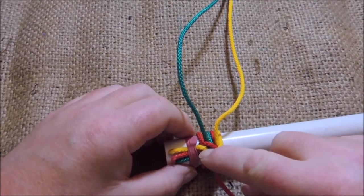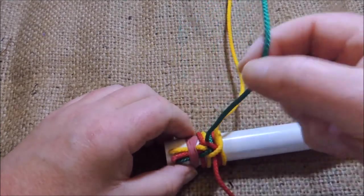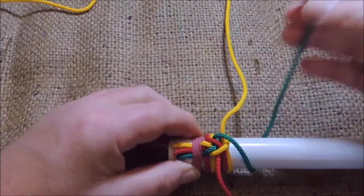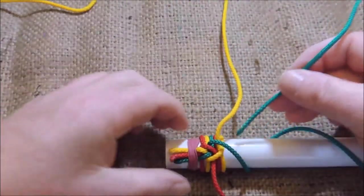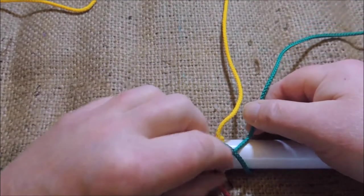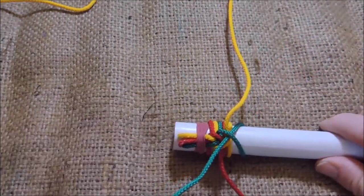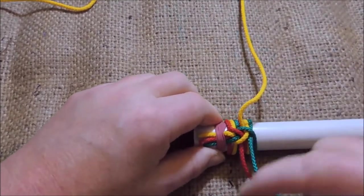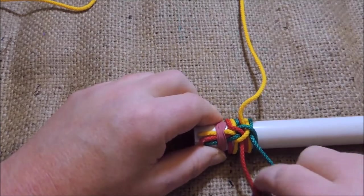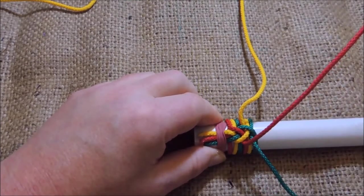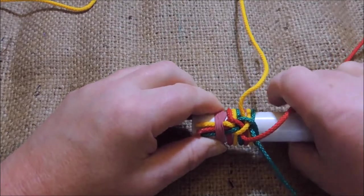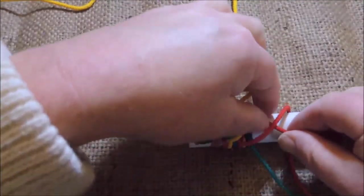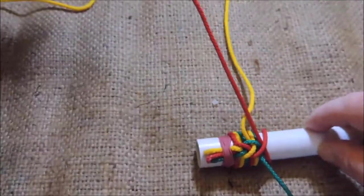So once again, we take the bottom one, which is the green one there, we bring it over the yellow one, like so, wrap it round the back of our pipe, tuck the end through like so, and bring it up, and tighten again. There we go, and then once again, the bottom one is the red one, we take that over the green one that we've just tied, like so, round the back of the pipe, through, and pull it through, like so.